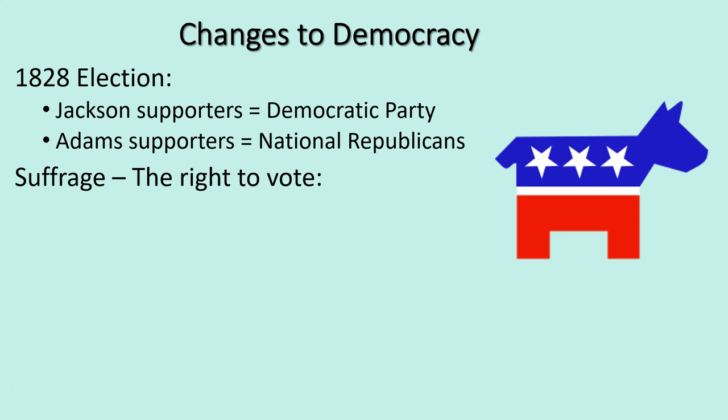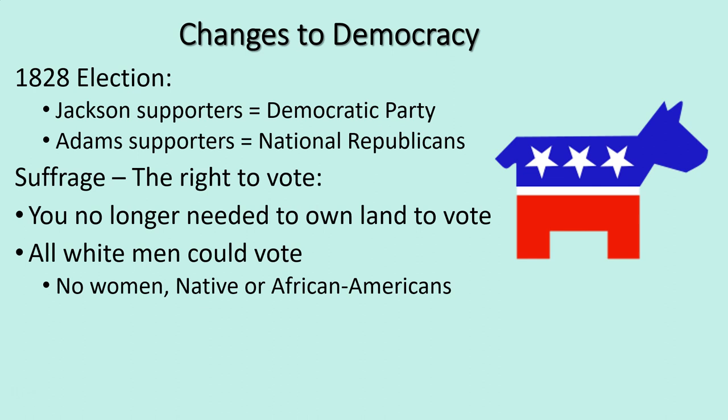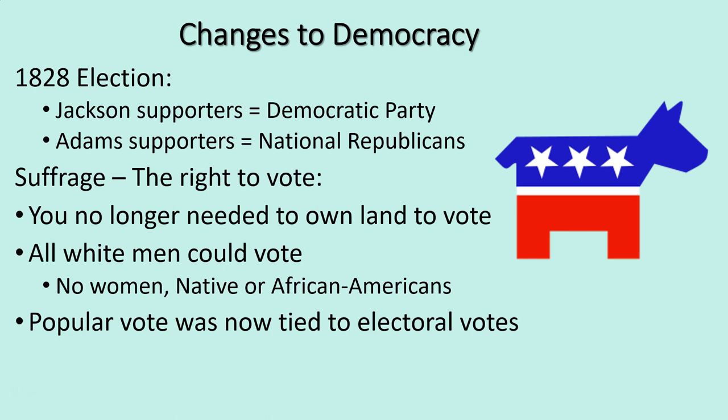Suffrage means the right to vote — don't confuse it with suffering; suffrage is a good thing. The right to vote changes a lot by the election of 1828. You no longer needed to own land in order to vote. Basically, all free white men could vote — no women, no Native Americans, no African Americans. That changes the dynamic of elections. Also, the popular vote actually matters at this point, as many states start tying the popular vote to how they distribute electoral votes. The electors are now designated to whatever political party they support.